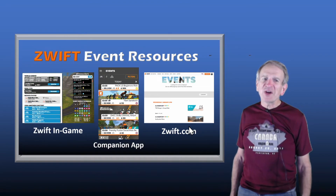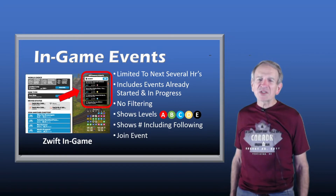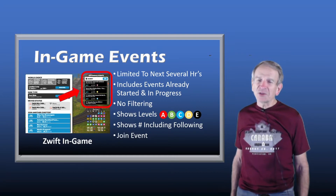There are three SWIFT resources to find events: on SWIFT in-game, on the companion app, and on SWIFT.com. In-game, right after you've logged in and paired your devices, you can find an unfiltered list of events in the top right-hand corner of the page. The list is limited to the next several hours, just depending on how many events are occurring at that time. The list includes events already in progress but which you can still join. It shows the intensity level of the event and the number of entrants, including the number that you are following. And you can join the event.